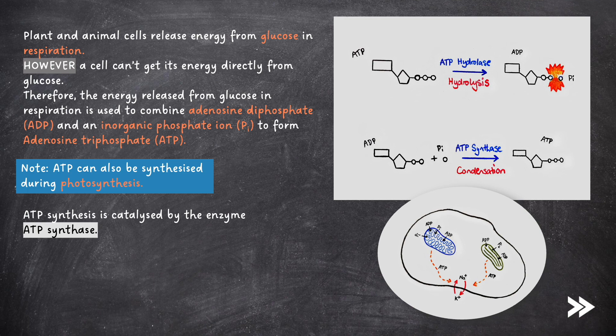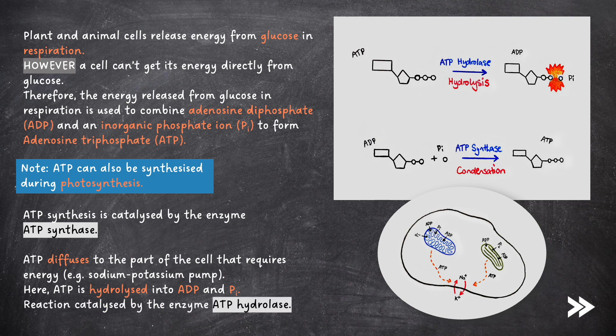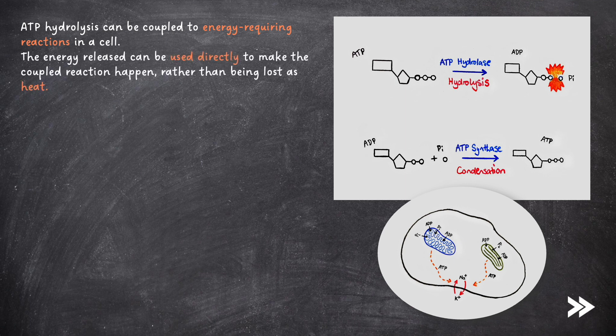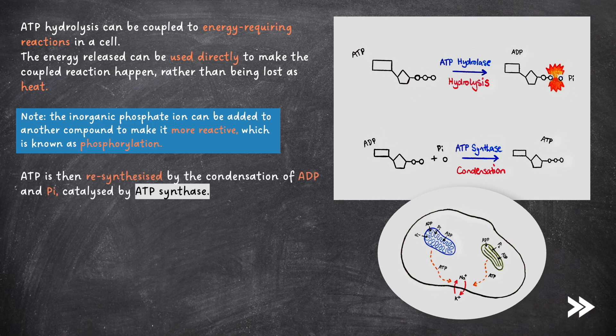ATP diffuses to the part of the cell that requires energy — for example, a sodium-potassium pump. Here, ATP is hydrolyzed into ADP and Pi. This reaction is catalyzed by the enzyme ATP hydrolase. ATP hydrolysis can be coupled to energy-requiring reactions in a cell. The energy released can be used directly to make the coupled reaction happen, rather than being lost as heat. Note that the inorganic phosphate ion can be added to another compound to make it more reactive, which is known as phosphorylation. ATP is then re-synthesized by the condensation of ADP and Pi, catalyzed by ATP synthase.